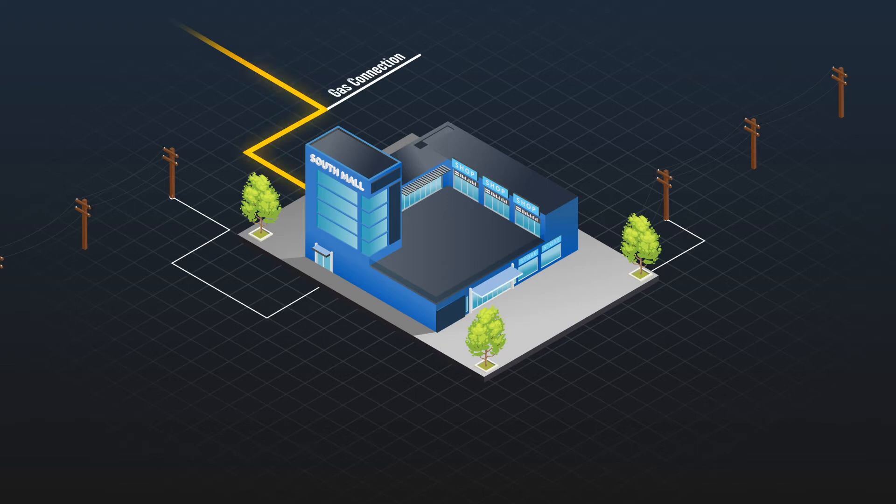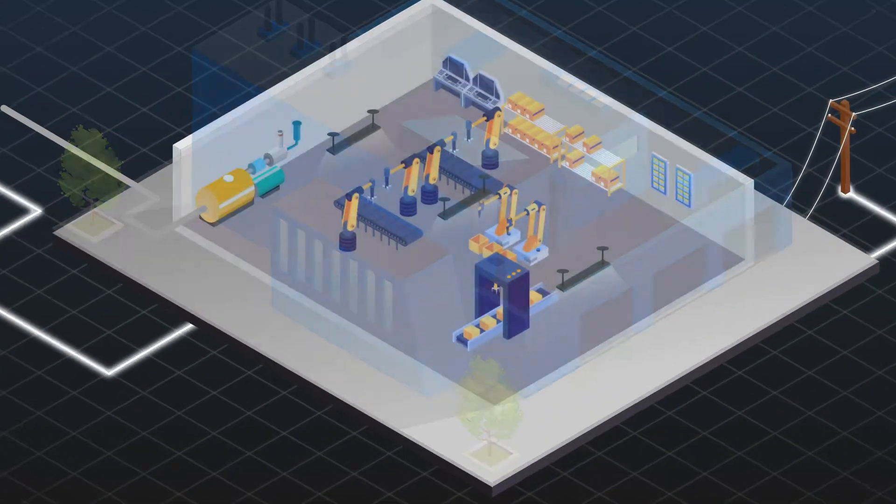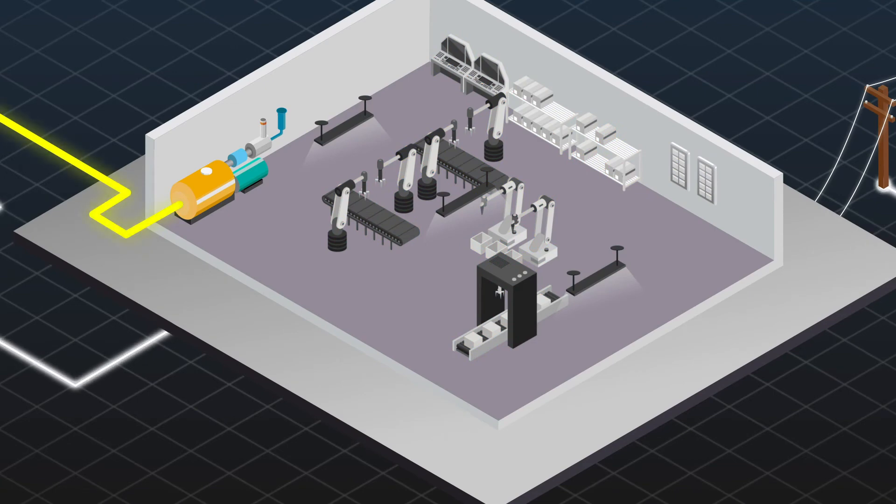Most existing operations purchase electricity directly through the grid network. If there's also a need for thermal energy, a gas connection may already be in place to operate a boiler or other gas appliances.